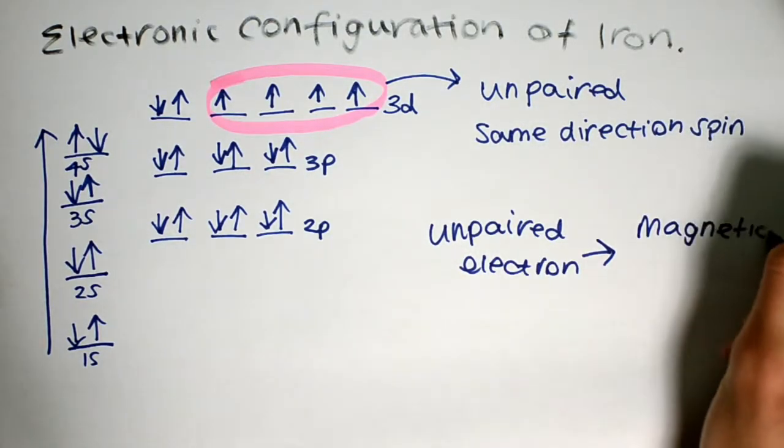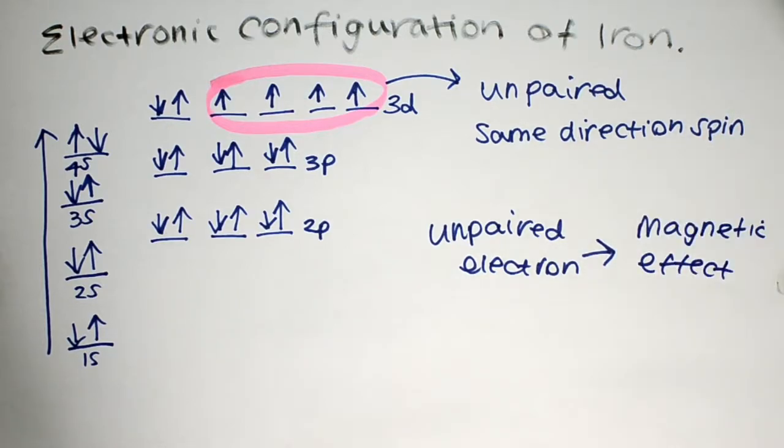These unpaired parallel electrons are often called magnetisation electrons. Therefore, each iron atom has a magnetic dipole.